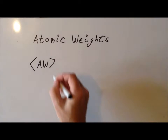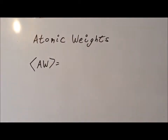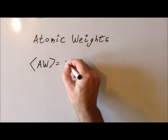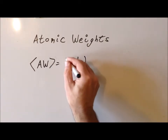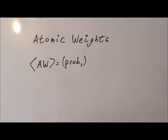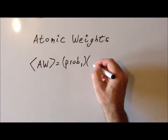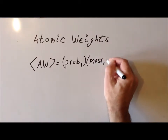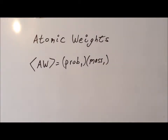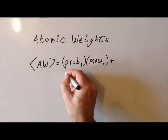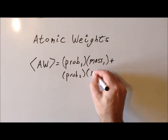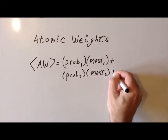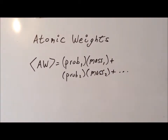So for a particular element, the weighted average — the atomic weight — we can compute a slightly different way. What we're going to do is look at the probability of a particular mass. We'll call it probability one, and multiply it by the actual mass that corresponds with that. And since we'll have multiple isotopes, we can continue this process: the probability of the second isotope times its mass, and then continue for each and every isotope of the element.